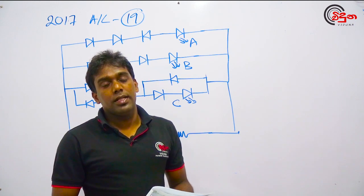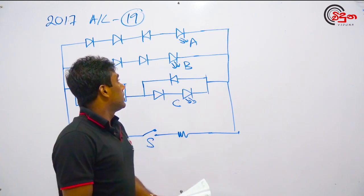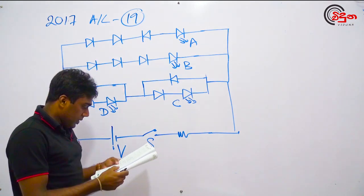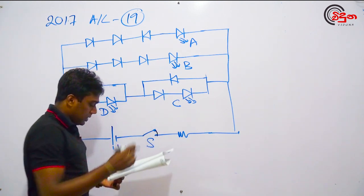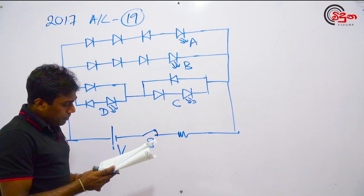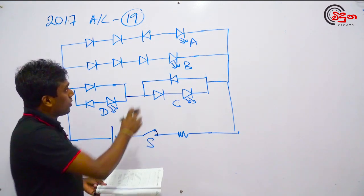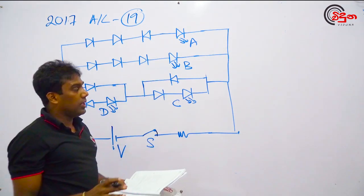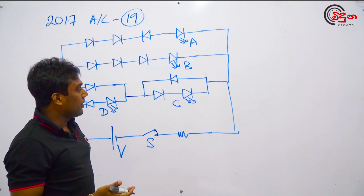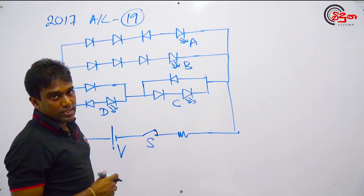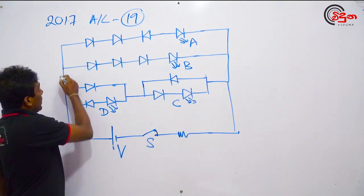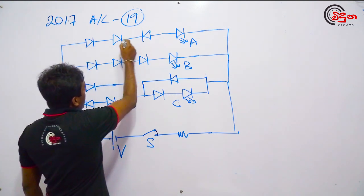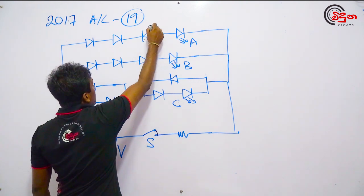The first thing about the 2017 A/L question 17 is understanding the concept. If you are a judge, you have to consider three different people.